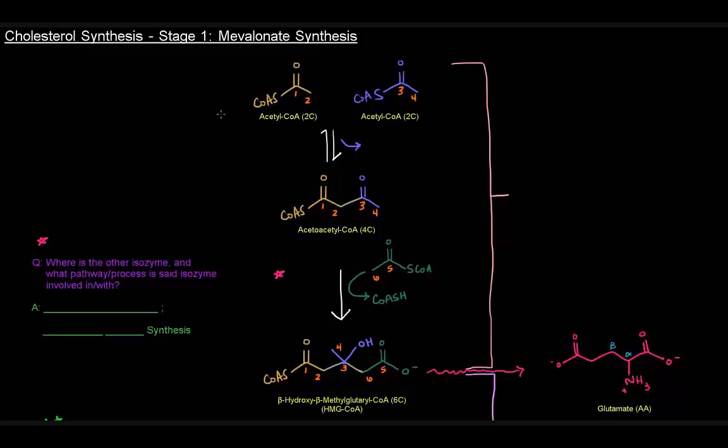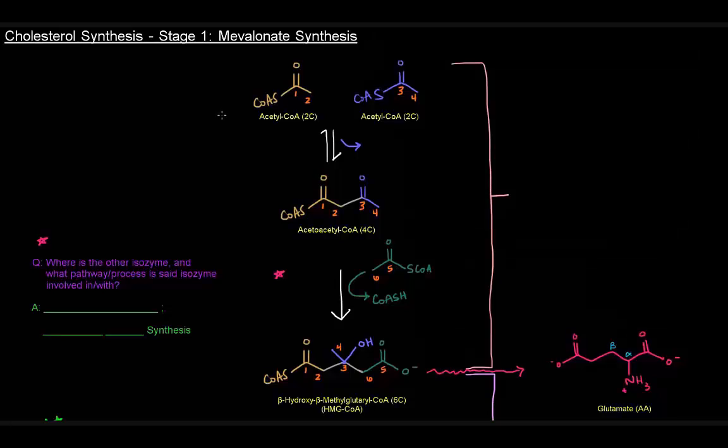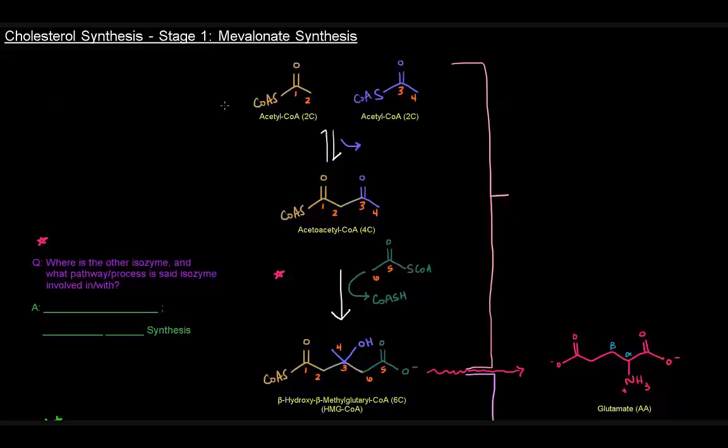First up in cholesterol synthesis, stage one is basically making mevalonate. We make it by combining three acetyl-CoAs. We're going to start here with two acetyl-CoAs, and I've numbered them as carbons one, two, three, four - two two-carbon units. We're going to bring them together and connect the second carbon to the third carbon, making a connection between these two carbons.